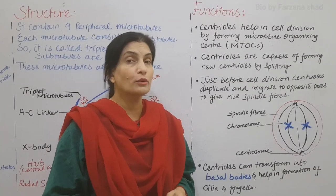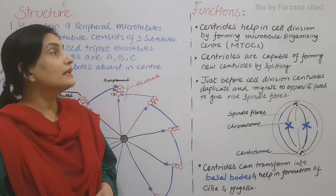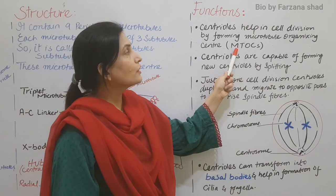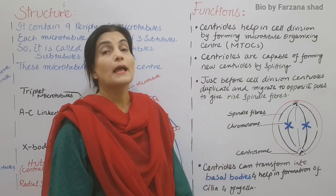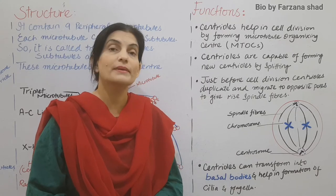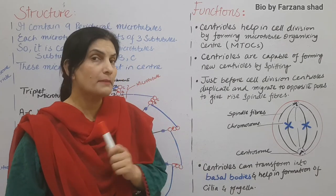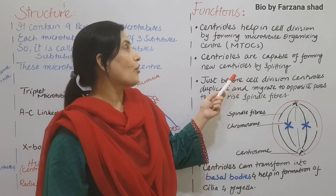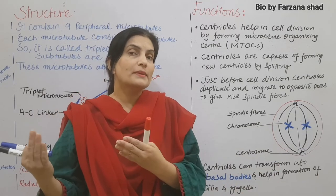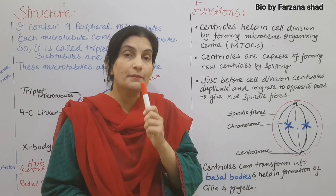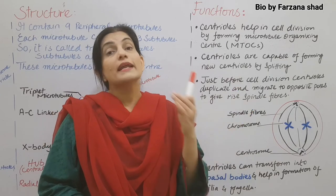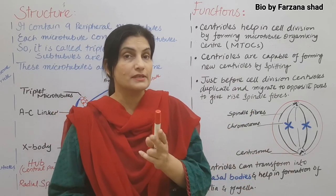Now we talk about the functions of centriole. The function of centriole is that it helps in cell division by forming the microtubule organizing center. The task of microtubule organizing center is spindle formation, which helps in cell division. Centrioles also have the capability of self-replication. They are capable of forming new centrioles by splitting. We discussed at the beginning that there's one pair of centrioles near the nucleus, but when the cell is about to divide, they duplicate. You see how many pairs are formed? Two pairs are formed.